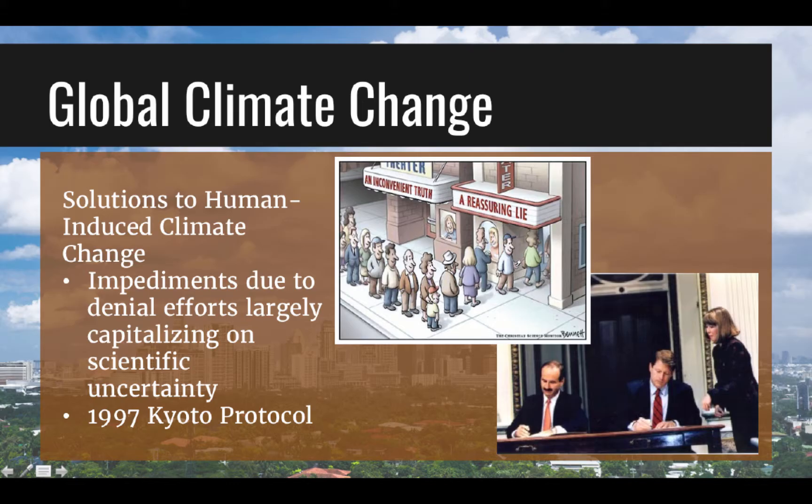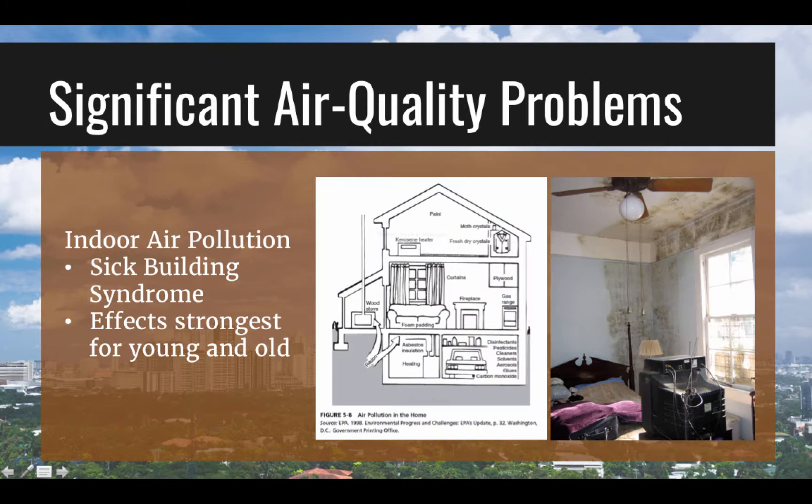In part, the Kyoto Protocol's slow ratification process is due to the tragedy of the commons, or the free rider problem. All countries will benefit from the reduction of carbon dioxide emissions, yet if some countries, including the United States, are unwilling to cooperate, all may suffer in the end.